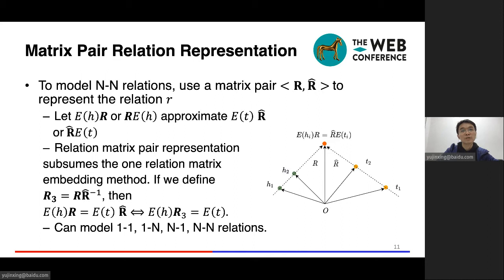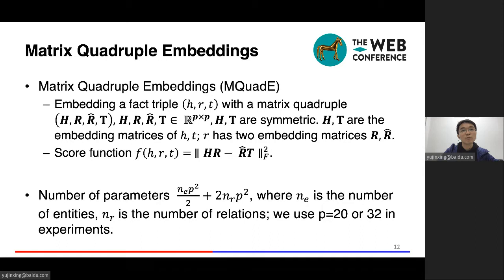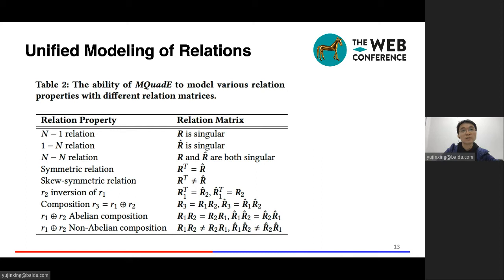Because if we define a new matrix R3 equals R times the inverse of R_head, then the two embedding equations are equivalent. By this way, we can model one-to-n, n-to-one, and n-to-n relations. Following the approach, we design the model to consider symmetry, inversion, and composition. We propose MQuadE, which represents a fact triple with a matrix quadruple. We find that if we use symmetric matrix for entity representations and design a score function, we can achieve a unified modeling of the various relation properties. The number of parameters of our approach is comparable to previous vector-based methods. We theoretically prove that MQuadE can achieve a unified modeling of the relations. We summarize the results in the table. You can see the proof in our paper if you are interested.